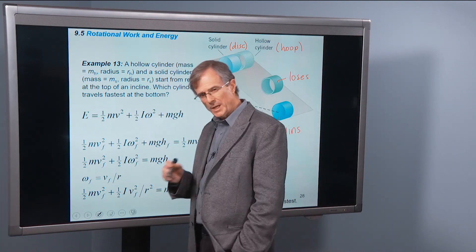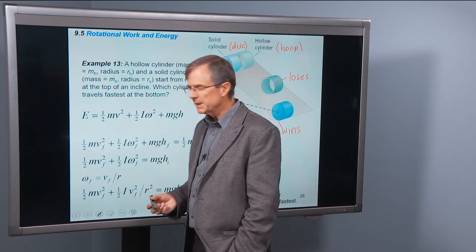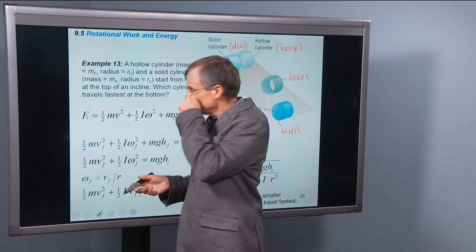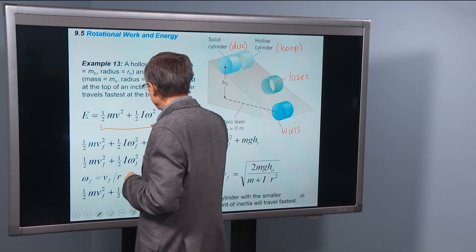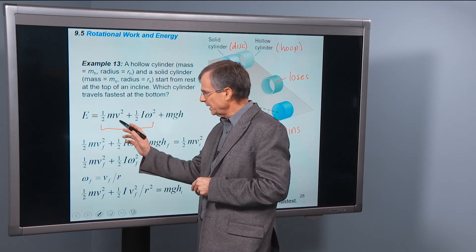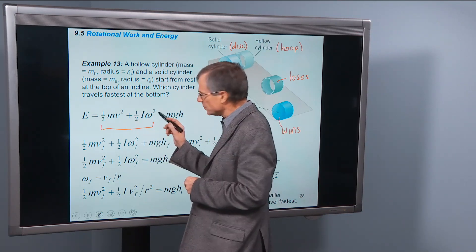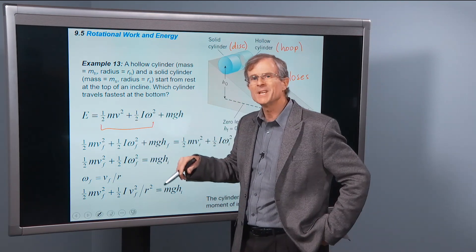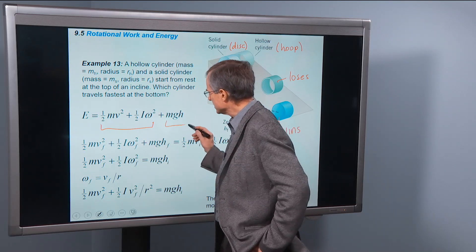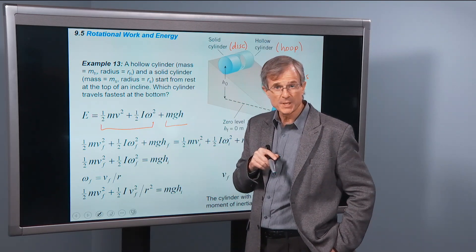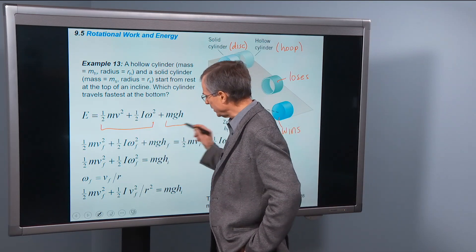Here's our solid disk or our solid cylinder, and here's our hollow cylinder, a ring or a hoop. And as we saw in the demo video, the solid disk wins. And the hoop loses. It lags behind. The total energy now, if we can ignore the work done by non-conservative forces, will be the kinetic energy, which is both translational energy, 1/2 mv², plus 1/2 Iω², the rotational kinetic energy, plus gravitational potential energy. So this is kinetic plus potential.